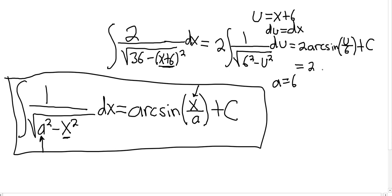This is equal to 2 arc sine, and then instead of u, it's (x + 6) over 6. Right, because a is 6. That's a lot of 6s plus C. And that, my friends, would be the final answer.